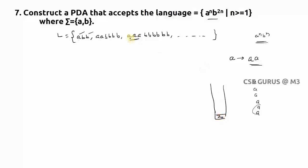Initially Z₀ is on the stack. For a single a with Z₀ on top, I need to push two a's. If you write the transition as a, Z₀ / aa — that is wrong, because a, Z₀ means you are removing Z₀ from the stack. What you are pushing is two a's, so you are missing Z₀. The correct transition must be: a, Z₀ / aaZ₀.